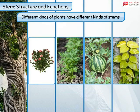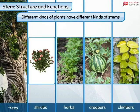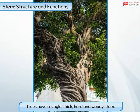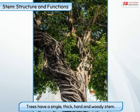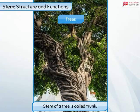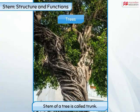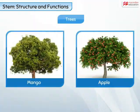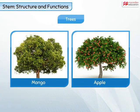Different kinds of plants have different stems. Plants can be named according to the types of stems they have. Plants that have a single thick, hard, and woody stem are called trees. The stem of a tree is also called the trunk. Big trees like those of mango and apple have a wooden trunk.